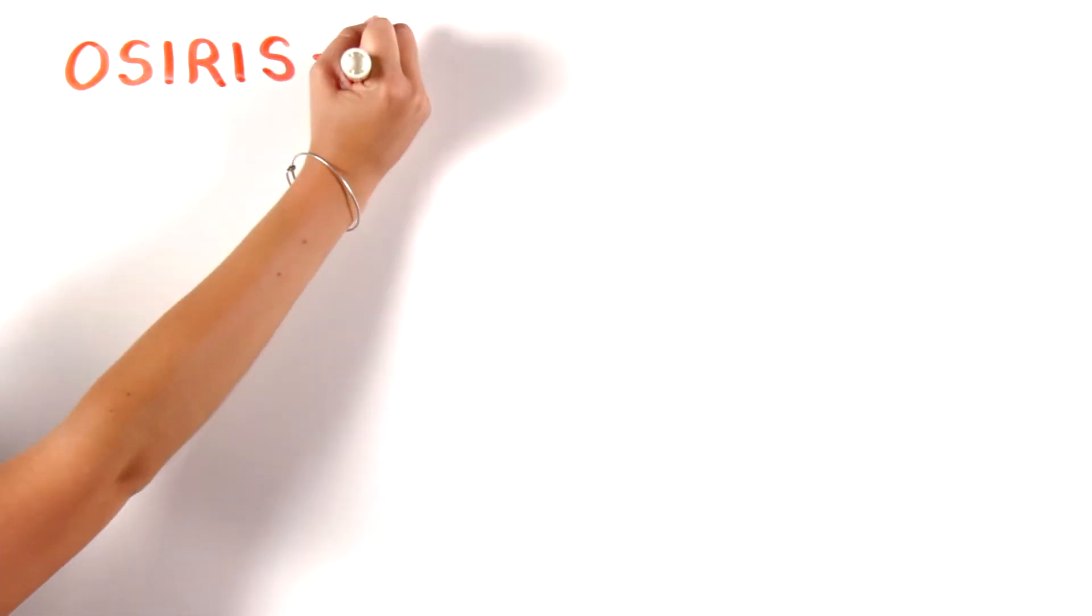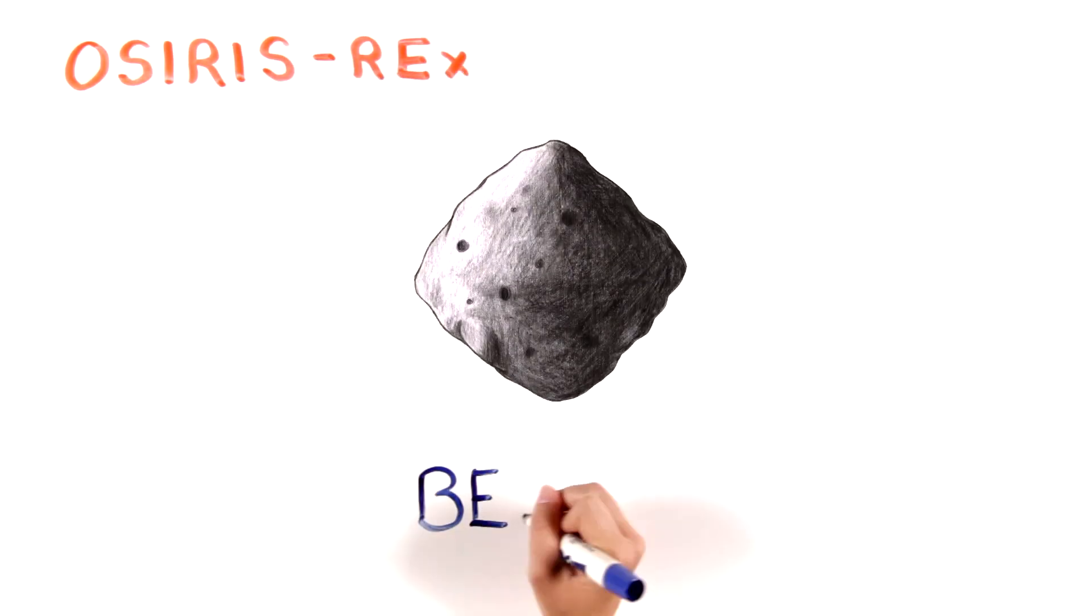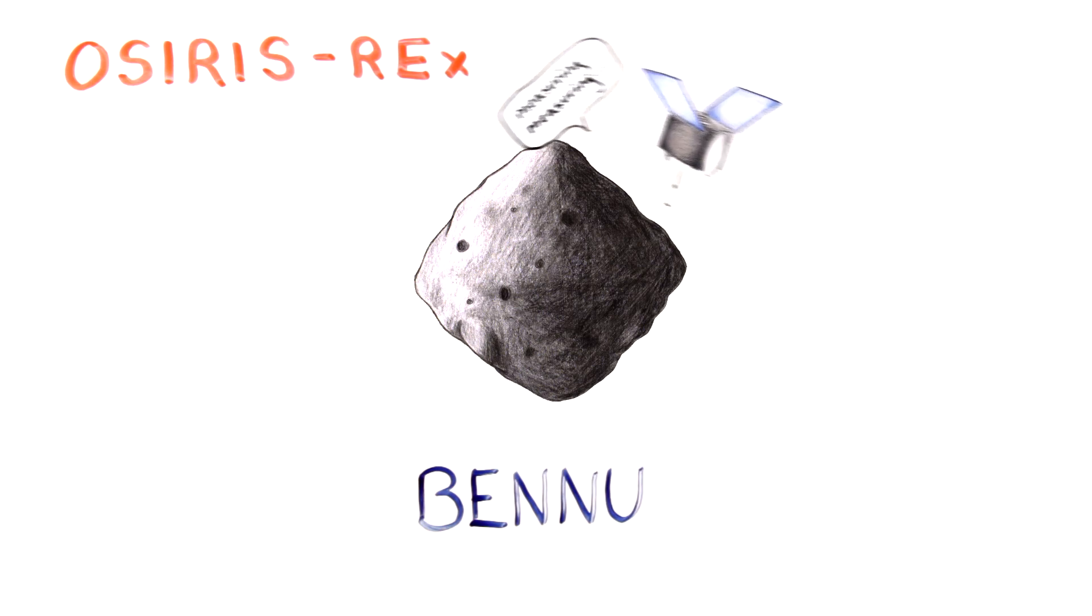The OSIRIS-REx mission is going to send a spacecraft in 2016 to visit an NEO called Bennu. The spacecraft will measure the Yarkovsky effect on Bennu's orbit to determine whether it will be a threat to the Earth in 200 years. You can learn more about the OSIRIS-REx mission from the other videos in the 321 Science series.